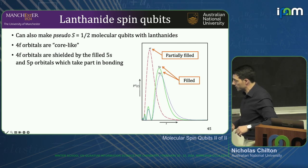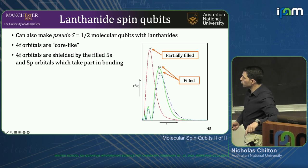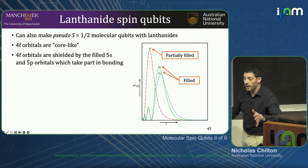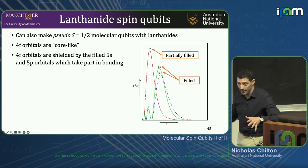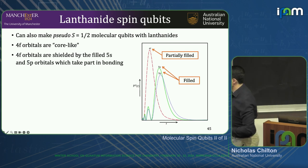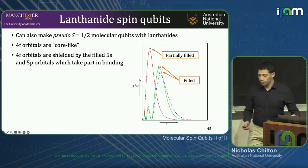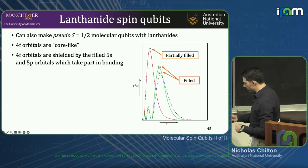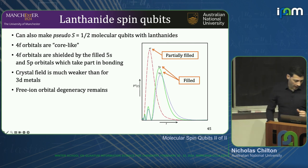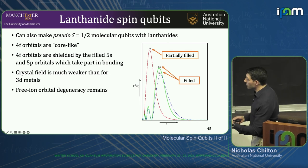A lot of people deal with lanthanide electronic structure, and it is complicated. I have a lot of fun stuff I want to get to, so I'm not going to dwell too much on this. Feel free to ask me afterwards. They're special in terms of the periodic table in the sense that the 4f orbitals are shielded by these filled 5s and 5p orbitals, which do all the bonding stuff. So the crystal field splitting is very, very weak.